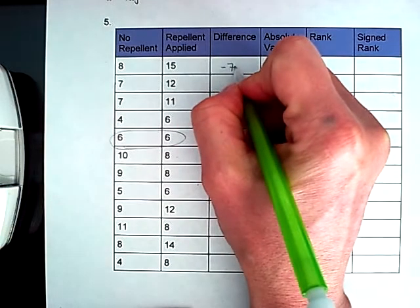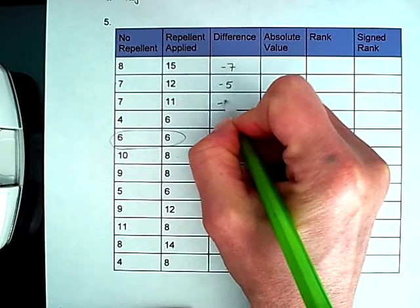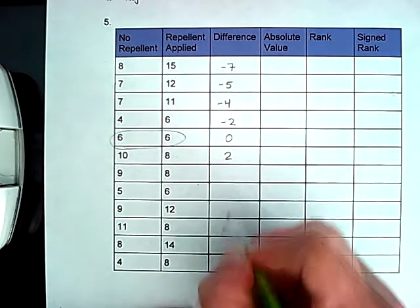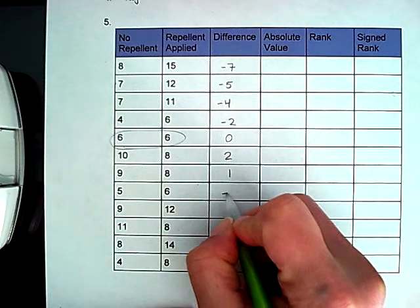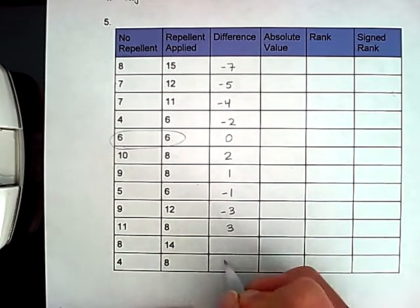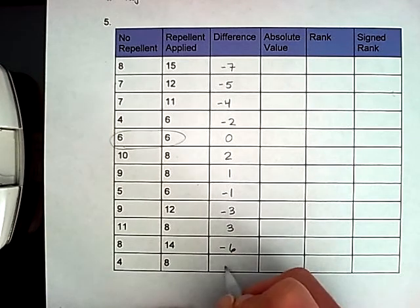So this has a difference of negative seven. This has a difference of negative five, negative four, negative two, positive two, one, negative one, negative three, positive three, negative six, and negative four.